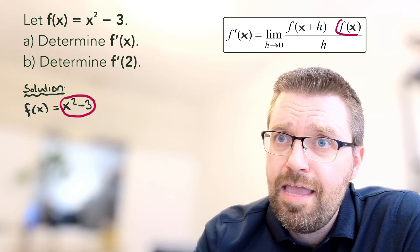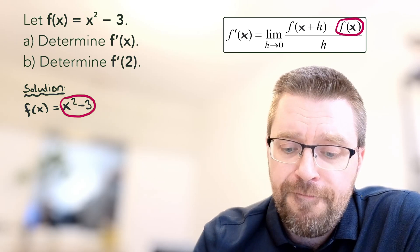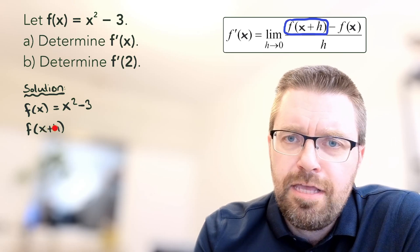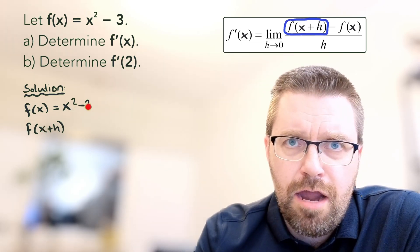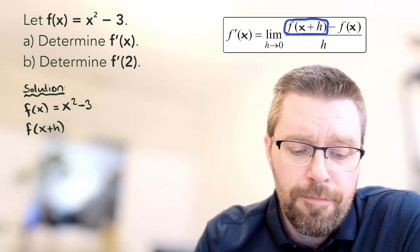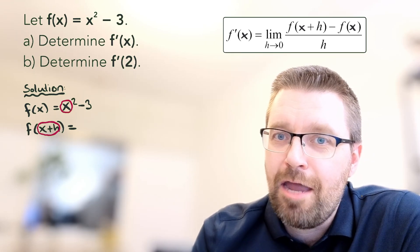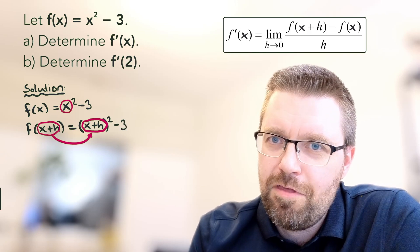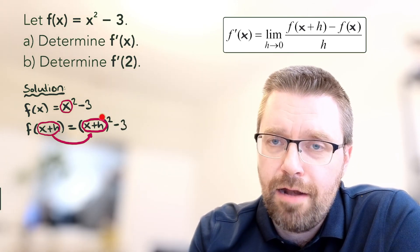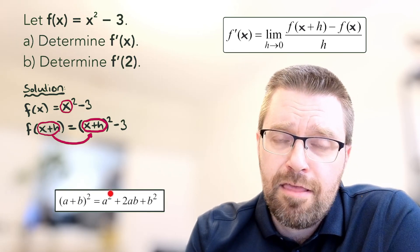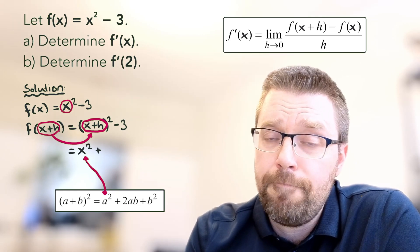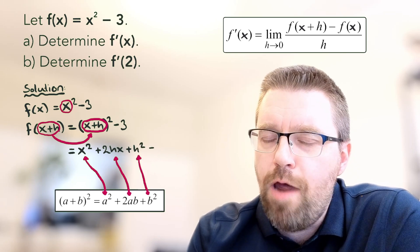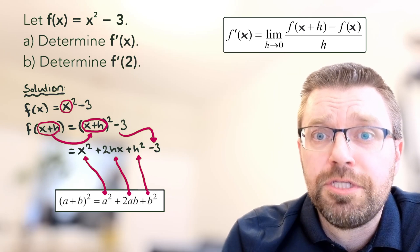First, I write down the function f of x equals x squared minus 3. I look at the expression f of x plus h, and I know that inside the parentheses the x value is replaced with x plus h. So I replace x with x plus h, writing it inside a parenthesis squared, then minus 3. I must remember how to square a binomial. I take the first term squared to get x squared, then the double product of my terms to get 2xh, and then plus h squared. And of course minus 3 at the end.